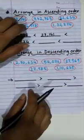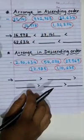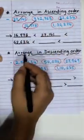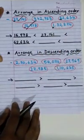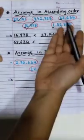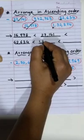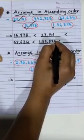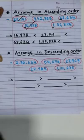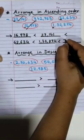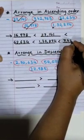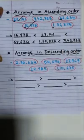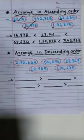Now we have the two 6 digit numbers. Let's compare. The first digit is 7 and here 1. So which is smaller? Of course 1,32,874. Easy. And in the end we will write 7,42,763. Easy, right?